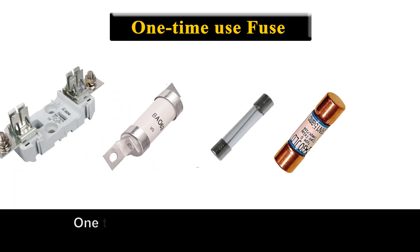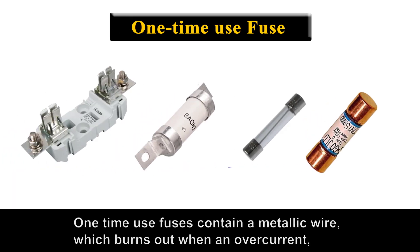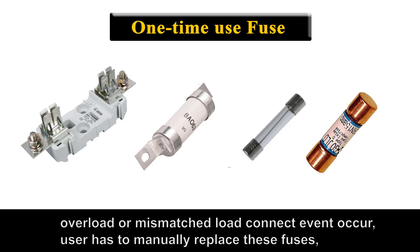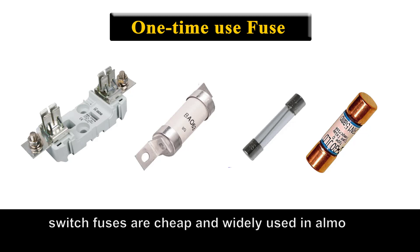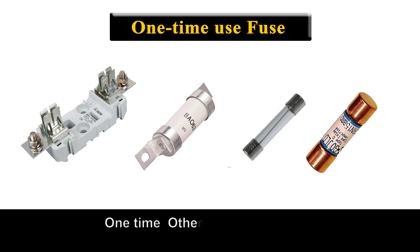One-time use fuses contain a metallic element which burns out when an overcurrent, overload, or mismatched load connection event occurs. The user has to manually replace these fuses. They are cheap and widely used in almost all electronics and electrical systems.